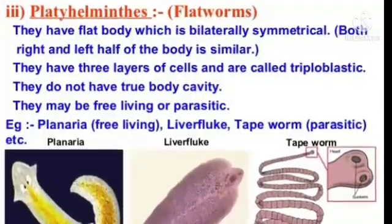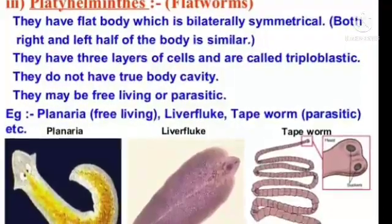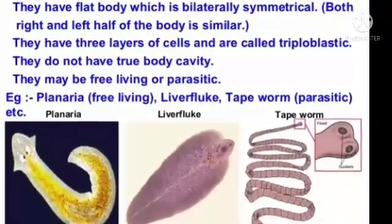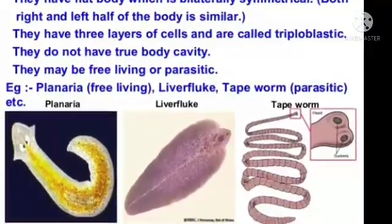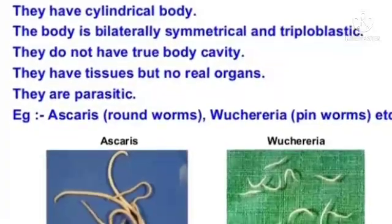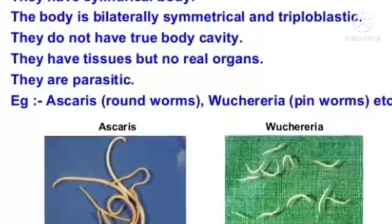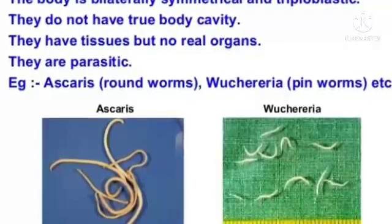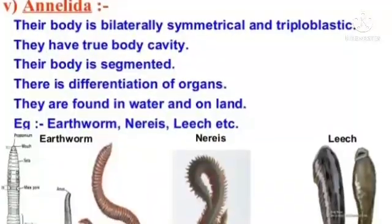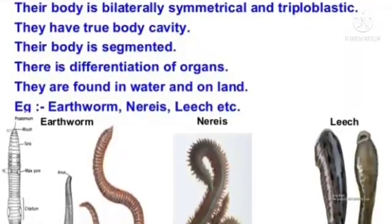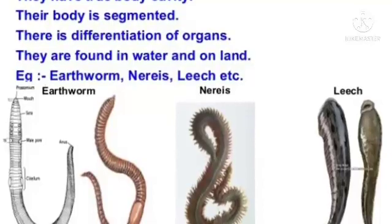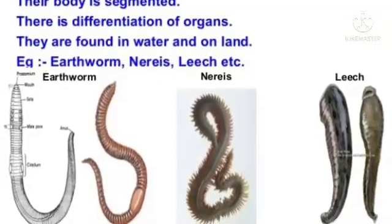Platyhelminthes: they have a flat body which is bilaterally symmetrical. They have three layers of cells and are called triploblastic. They do not have a true body cavity. They may be free-living or parasitic. Examples: Planaria (free-living), liver fluke and tapeworm (parasitic). Nematoda: they have a cylindrical body, bilaterally symmetrical and triploblastic. They do not have a true body cavity and have tissues but no real organs. They are parasitic. Examples: Ascaris, roundworms, Wuchereria, pinworms, etc. Annelida: their body is bilaterally symmetrical and triploblastic. They have a true body cavity. The body is segmented and differentiation of organs is present. They are found in water and on land. Examples: earthworm, Nereis, leech, etc.